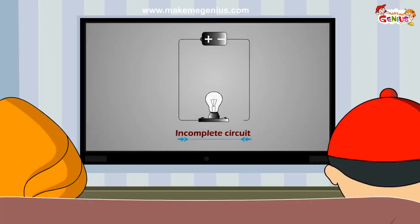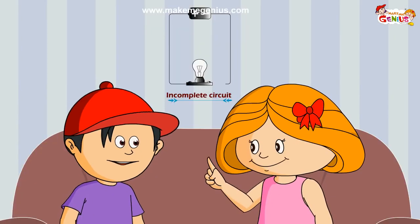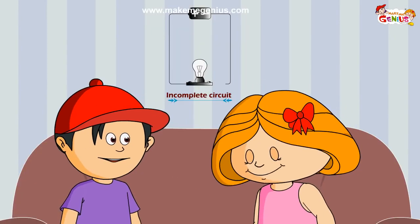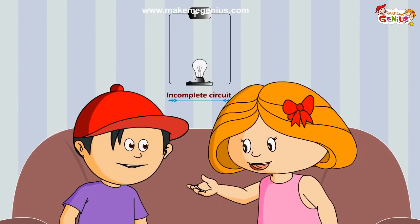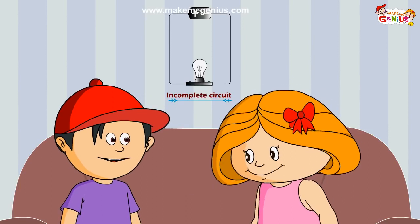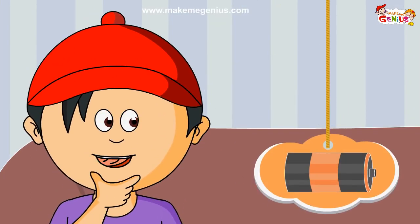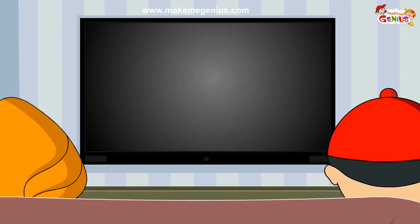Now look at this second circuit. What is missing? The circuit is not complete. Correct — this is an incomplete circuit. You need a complete path for the current to flow in. This is called an electric circuit. You need some power source like a cell or a battery, and you need a full circuit for electric charge to flow.